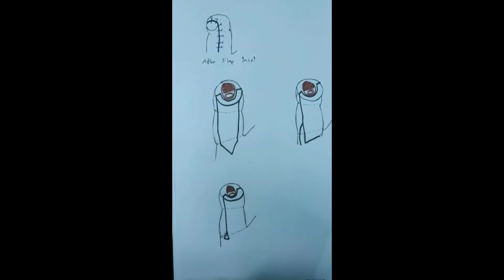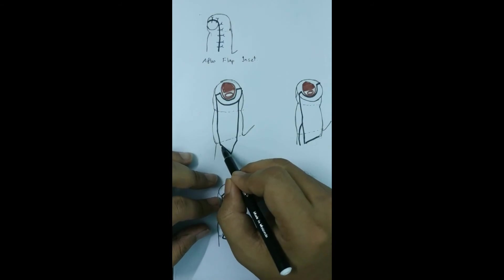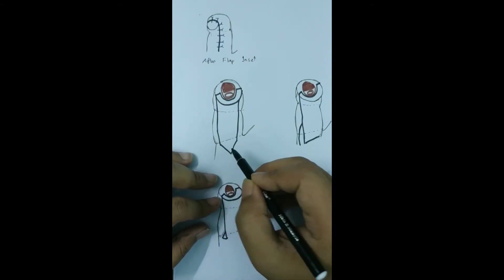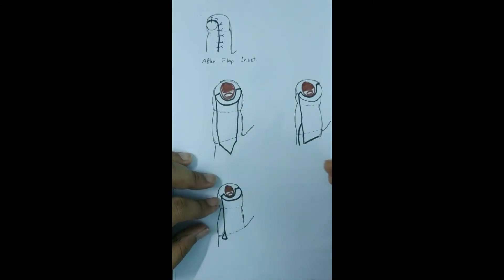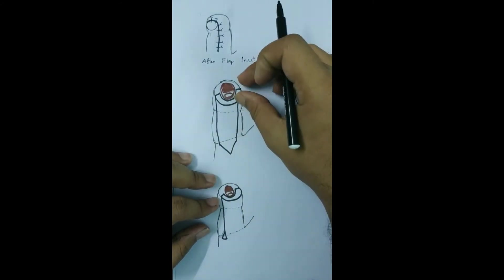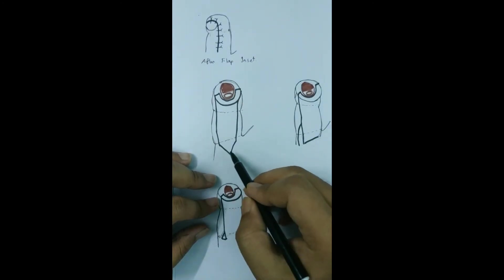The second option is we make an incision at the base of the flap, a V incision, making the flap an island flap. We just incise the epidermis and dermis and leave the subcutaneous tissue. It will help to advance the flap more.